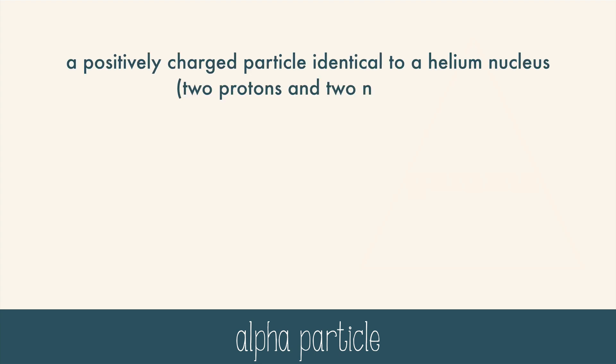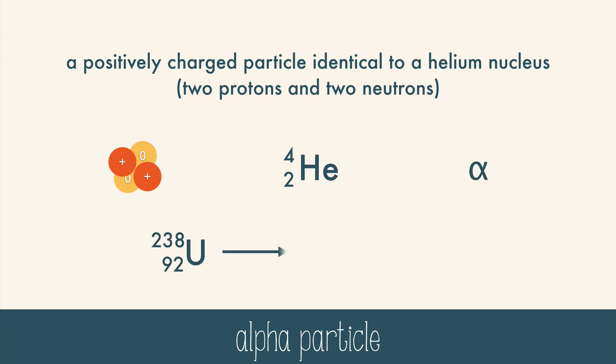An alpha particle is a positively charged particle that is identical to a helium nucleus, which is two protons and two neutrons. Alpha particles are written in isotope notation, or sometimes written with a Greek letter alpha. Here, uranium-238 releases an alpha particle and is transformed into thorium-234. The masses 234 and 4 add up to 238, and the atomic numbers 90 and 2 add up to 92, so this equation is balanced.